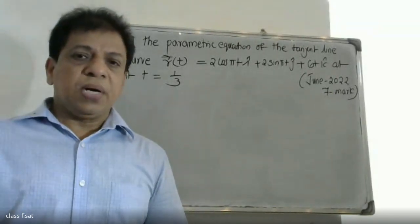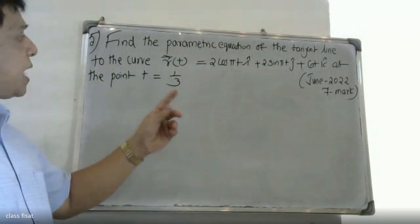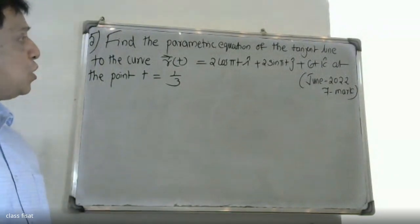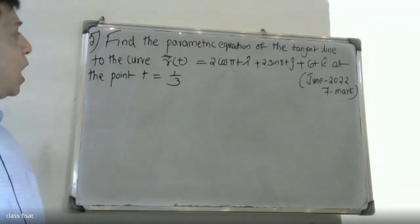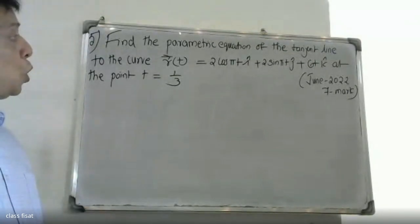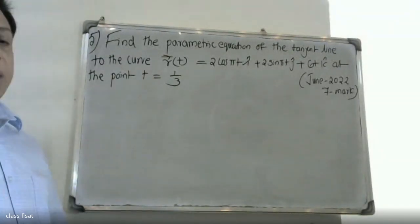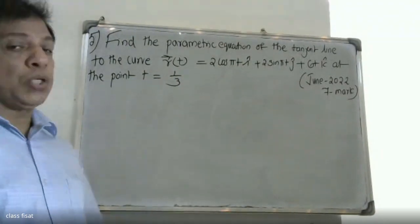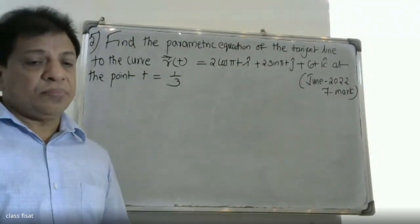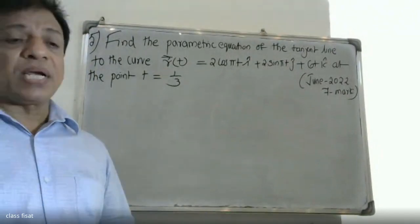Good morning friends. At the university question: find the parametric equation of the tangent line to the curve r(t) = 2cos(πt)i + 2sin(πt)j + 6tk at the point t = 1/3. This is an 8-mark question.